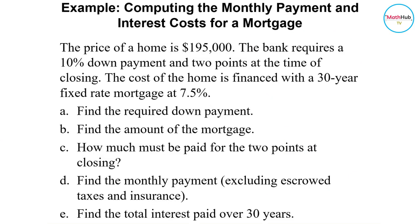We will look at the following problem. The price of a home is $195,000. The bank requires a 10% down payment and 2 points at the time of closing. The cost of the home is financed with a 30-year fixed-rate mortgage at 7.5%.